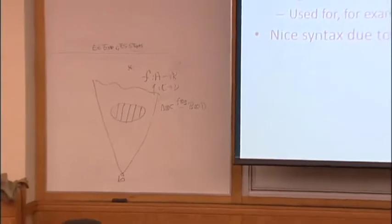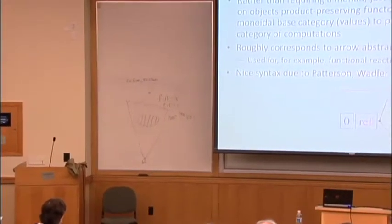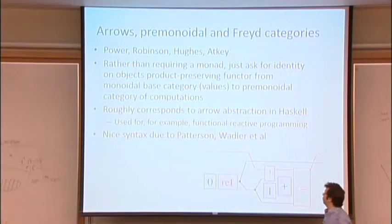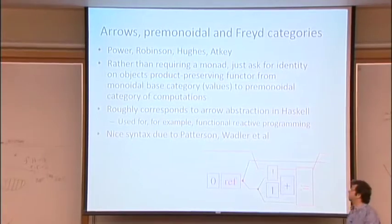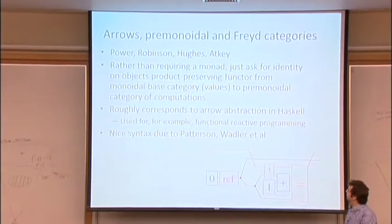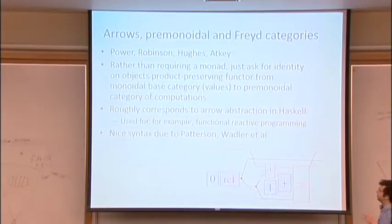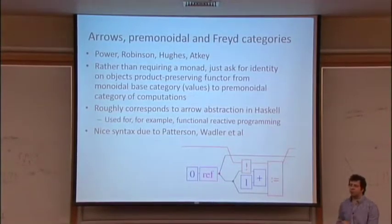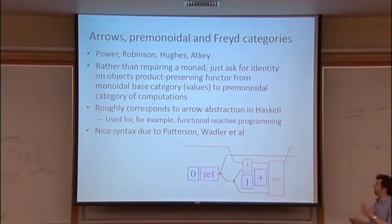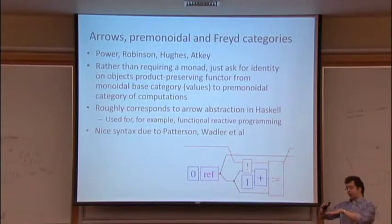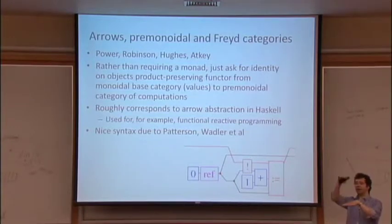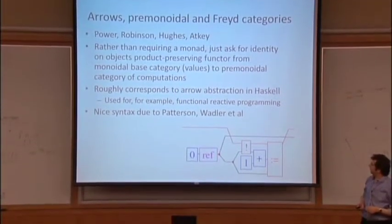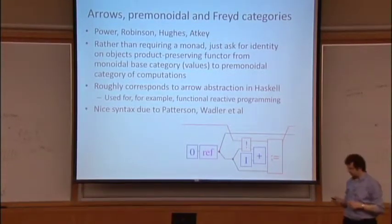This is a nice generalization of monads, and it roughly corresponds to something John Hughes came up with in the context of programming in languages like Haskell, which he called arrows. This has been used widely in Haskell programming, particularly for functional reactive programming — even programs to control robots have been structured with this abstraction. There's a nice associated syntax originally due to Patterson, then refined by Phil Wadler and co-authors. Alan Jeffery proposed a graphical language for working with pre-monoidal categories with a three-level split: a category of values, a category of commutative computations, and a category of non-commutative processors, with a very pretty boxes-and-wires language.